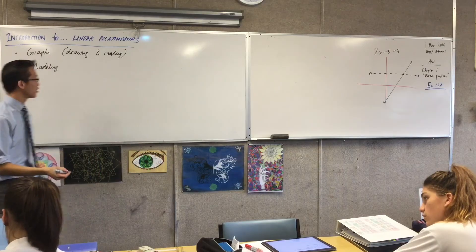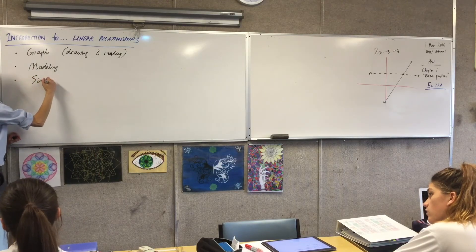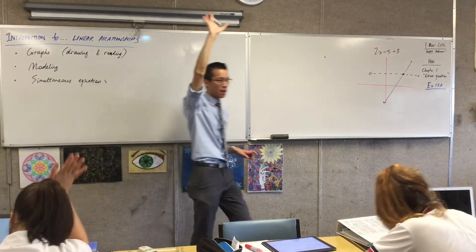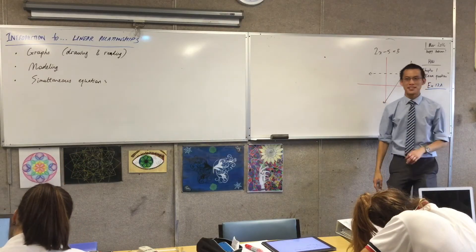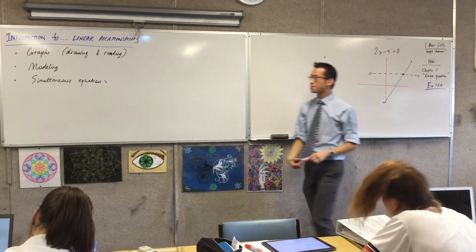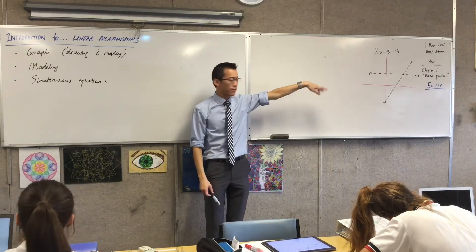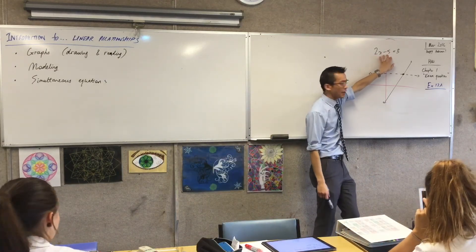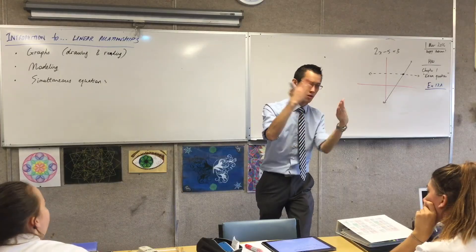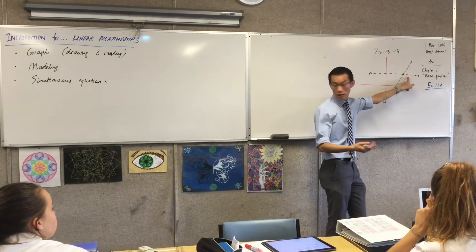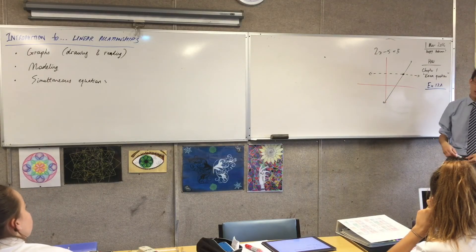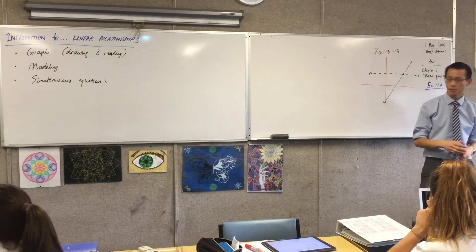The last major skill is simultaneous equations. How many of you have encountered simultaneous equations before? What this has to do with linear relationships is the drawing I just showed you — 2x minus 5 has a picture behind it, and the number 3 has a picture behind it. Solving simultaneously just means: where do these happen at the same time? Where is that spot — what's that value? That's all it means. That's just the picture of what it represents, and we're really going to master that.